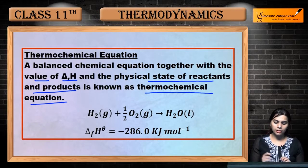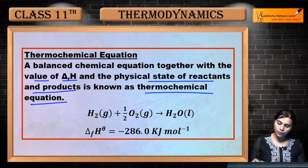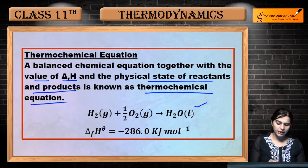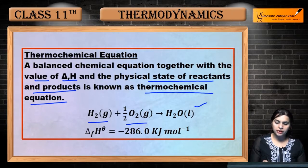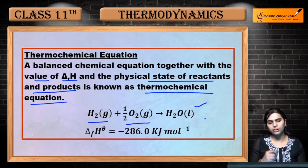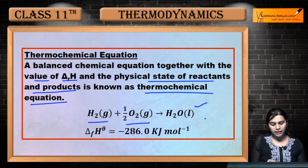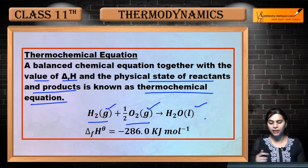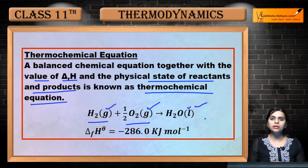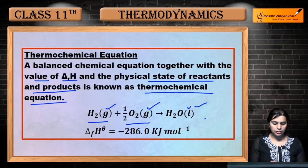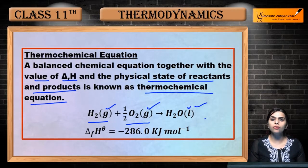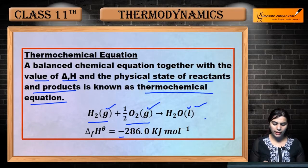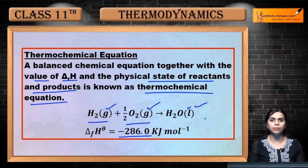For example, the formation of water: when you combine hydrogen gas and oxygen gas, you get water. G represents gaseous state, and L represents liquid state. So ΔfH⁰ for the formation of water has a value of minus 286.0 kilojoules per mole.